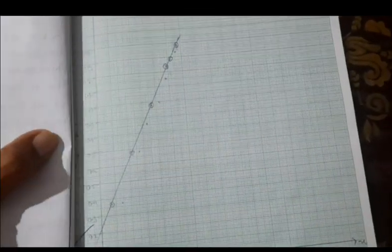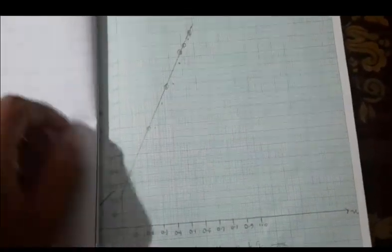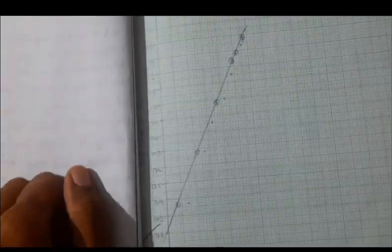Once you do the calculation in tabular column, plot the graph of log H versus log of delta R by R. You will get a straight line.